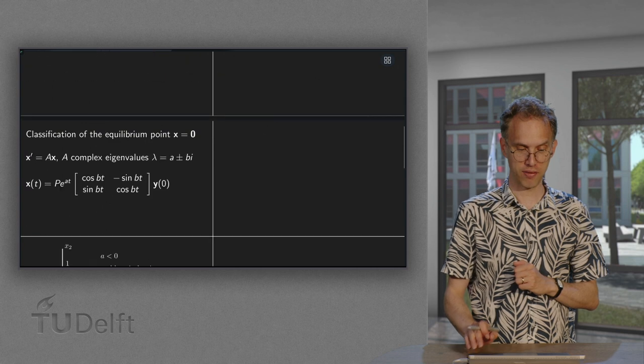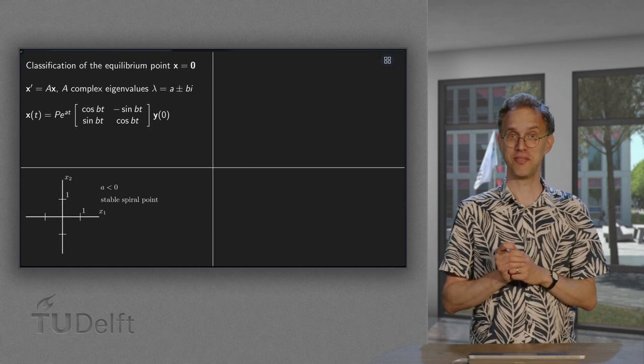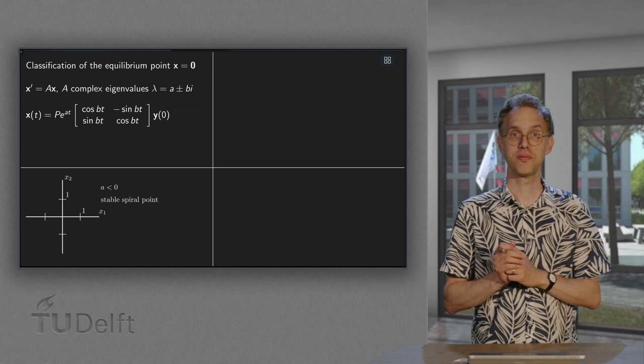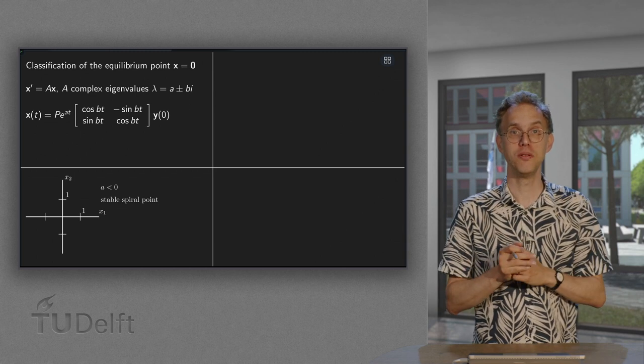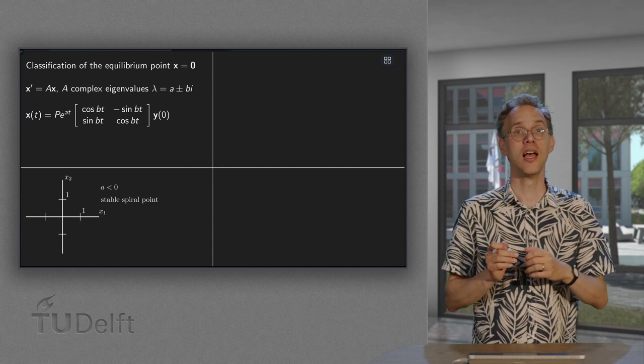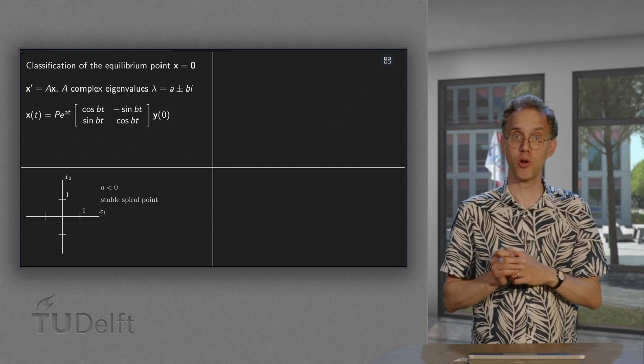So what can we have? Well first of all we can have a negative. If a is negative, we get e to the power minus t or e to the power minus 2t or something like that and everything becomes smaller.